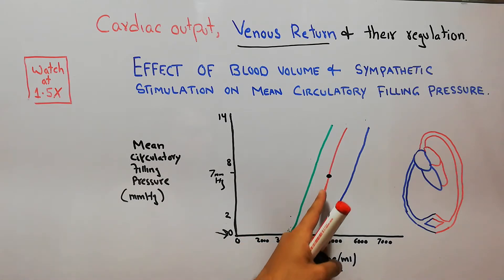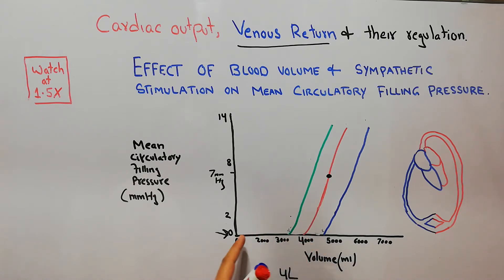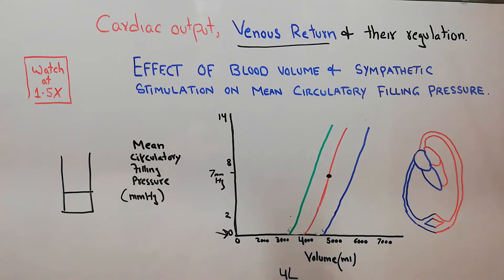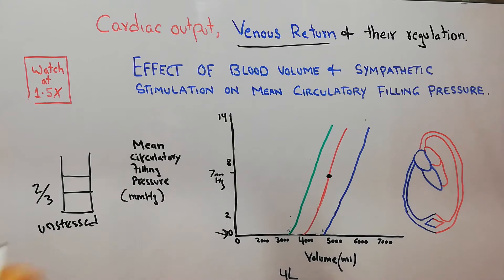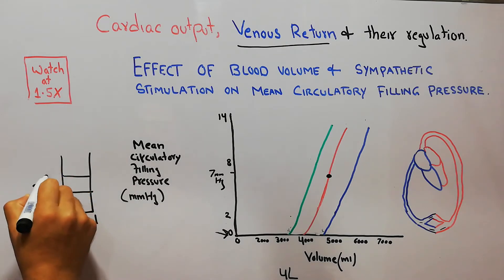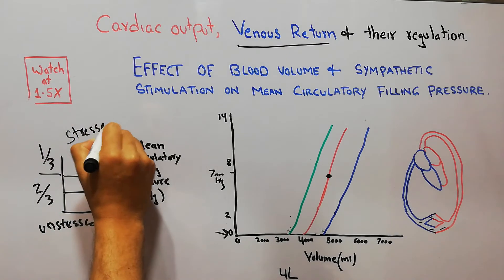Until we reach the 4000 mL range there is no change in mean circulatory filling pressure. This is because two-thirds of the blood volume is basically unstressed — it fills the blood vessels and just fills the system without exerting pressure. That extra one-third beyond this point is the stressed volume.